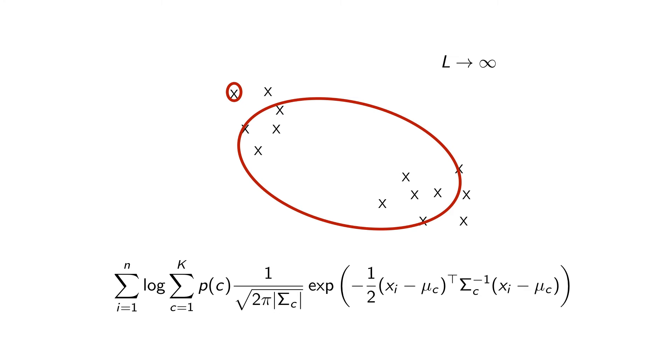But the more important thing is that the determinant being in the denominator because that means that if we make our covariance really small, then we get a really huge score in that Gaussian likelihood.